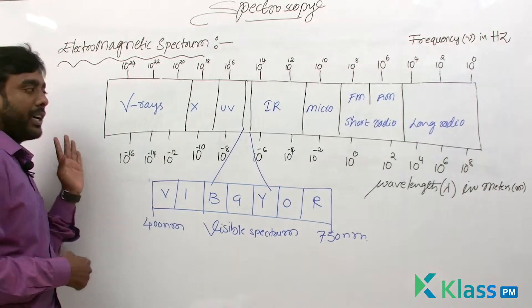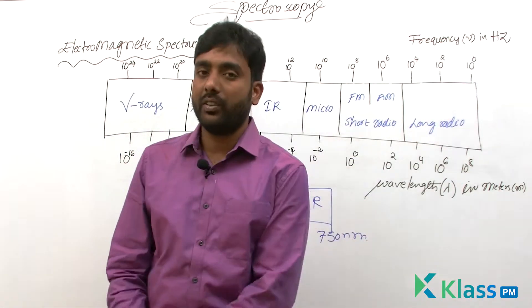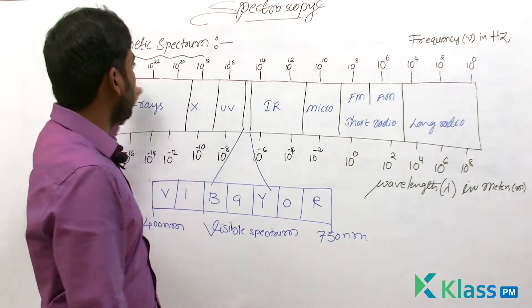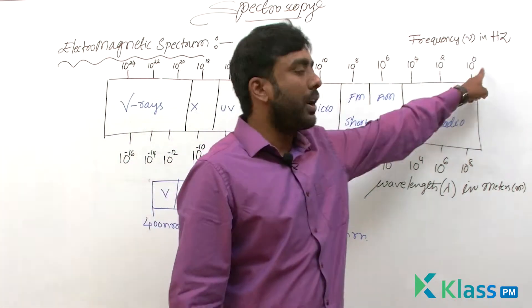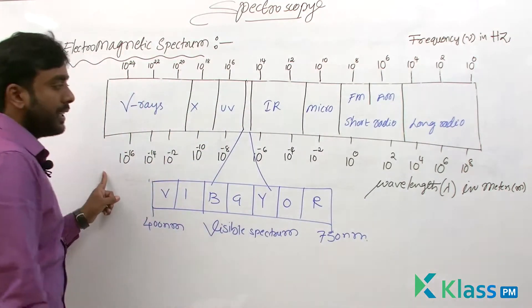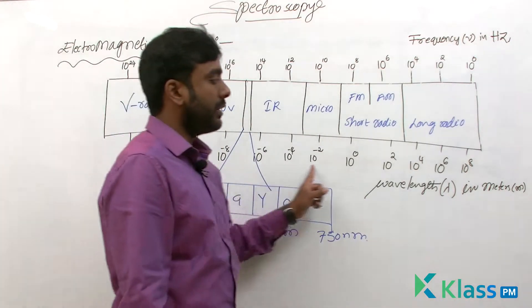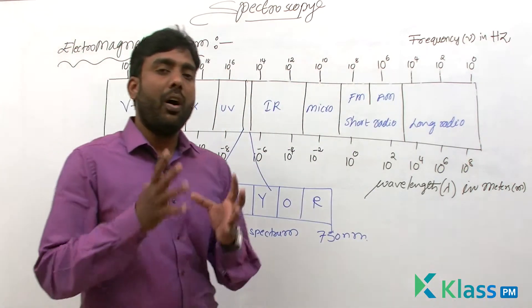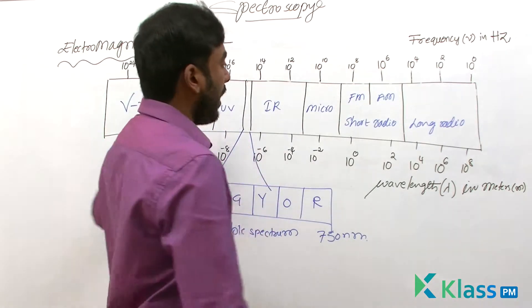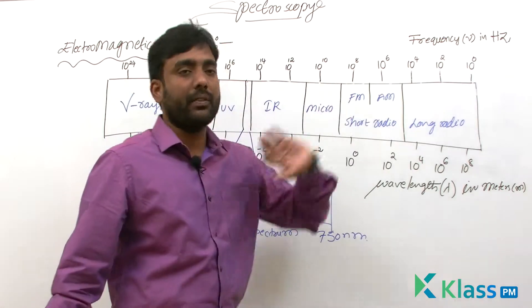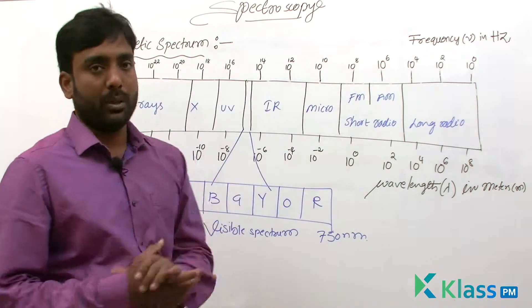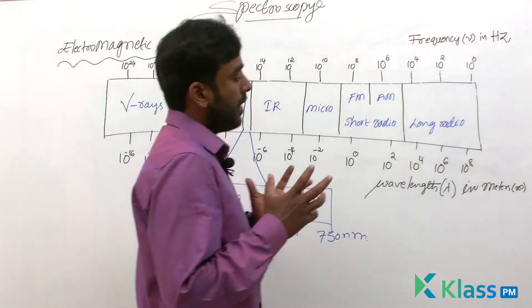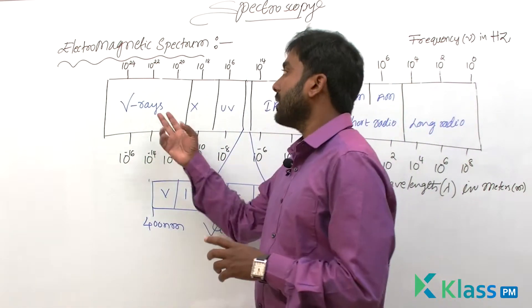Here we have arranged all the different types of electromagnetic radiations in the decreasing order of their frequencies. What you are seeing here is decreasing order — from 10 to the power of 24, keep on decreasing. So if we arrange all the electromagnetic radiations in the increasing order of their wavelengths or decreasing order of their frequencies, it is called electromagnetic spectrum. Gamma rays are the electromagnetic radiations which have very low wavelengths and high frequency.